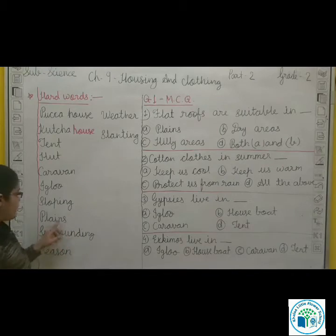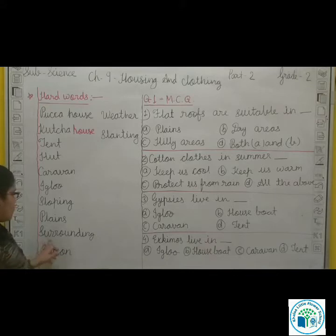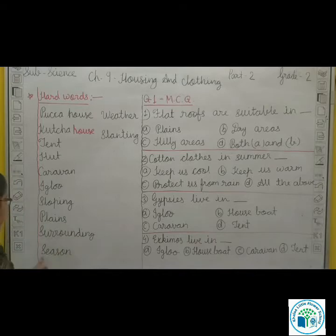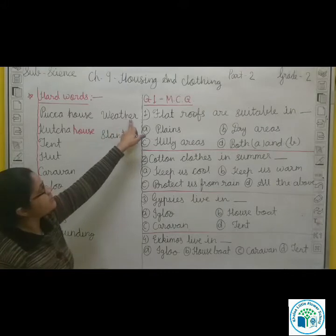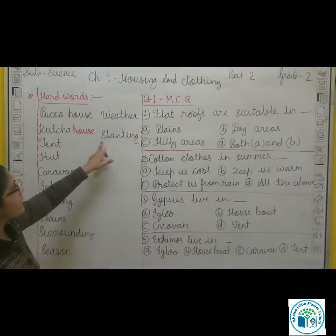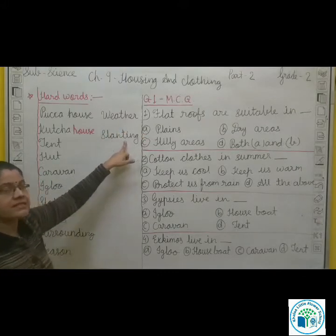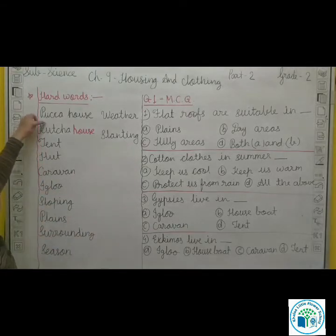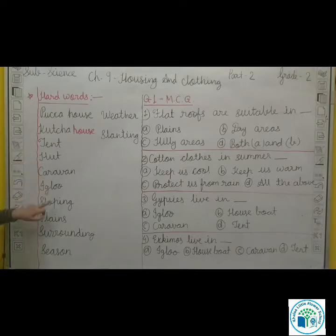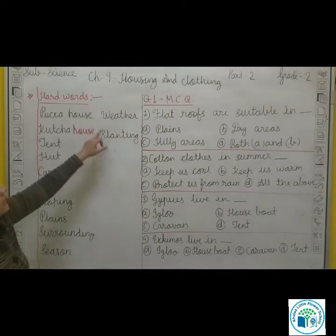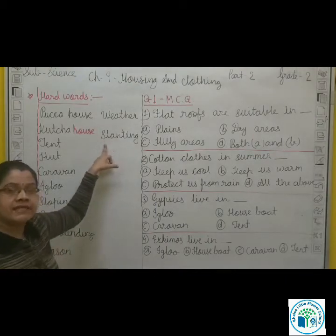Plains means equal place. Surroundings means nearby. S-E-A-S-O-N, Season. W-E-A-T-H-E-R, Weather. S-L-A-N-T-I-N-G, Slanting. Pakka house, Kaccha house, Tent, Herd, Caravan, Igloo, Slanting, Plains, Surroundings, Season, Weather and Slanting. This is a house made of mud.